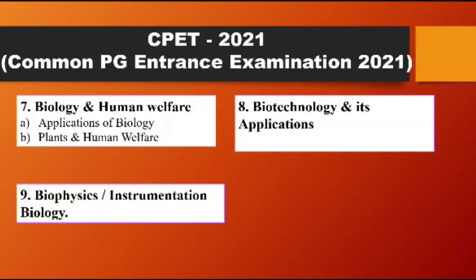Point number nine is Biophysics and Instrumentation Biology. All your biology and botany syllabus is included in biophysics. Topics here cover all instruments such as microscopes, electrophoresis, and other laboratory techniques and demographics relevant to biology.